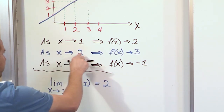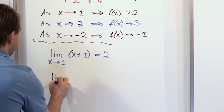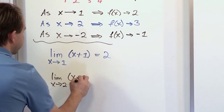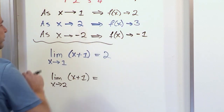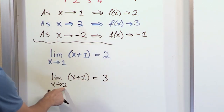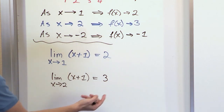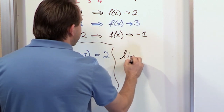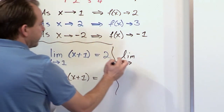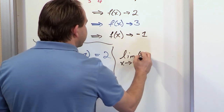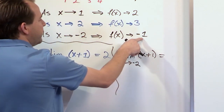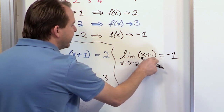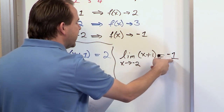The second example: the limit as x approaches 2 of x plus 1 is equal to 3. Again, it looks like we just take the 2 and plug it in — 2 plus 1 is 3. And then our last example: the limit as x approaches negative 2 of x plus 1 is equal to negative 1. Again, practically speaking, we plug it in — negative 2 plus 1 gives us negative 1.